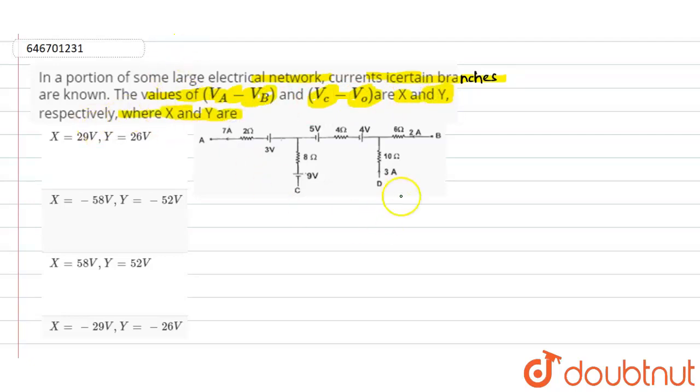So here we need to find out the values of x and y. So he is saying that there will be certain amount of current passing to the branches and the values are Va minus Vb and Vc minus V naught.